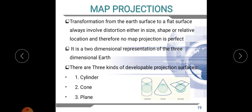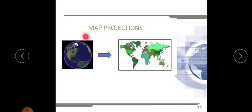Based on the developable projection surface, we can classify map projection as cylindrical projection, conical projection, and planar projection. If the projected surface is a cylinder, it is cylindrical; if it is a cone, it is conical; if it is a plane, it is planar. This is known as map projection — converting our three-dimensional earth into a two-dimensional map.